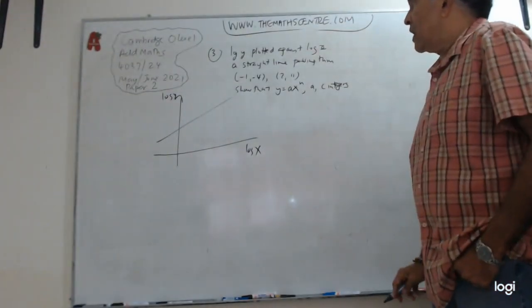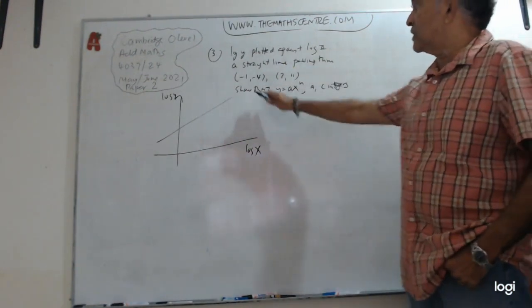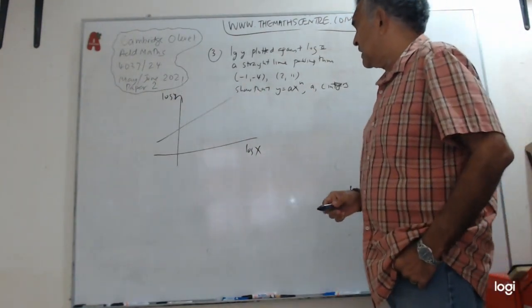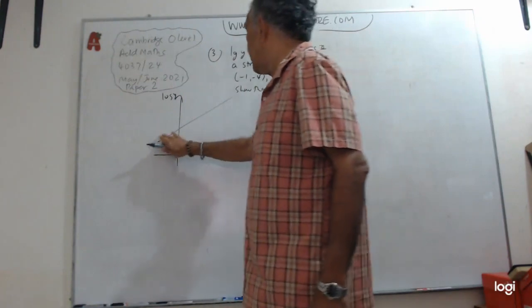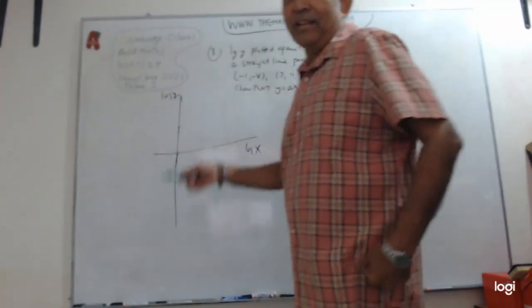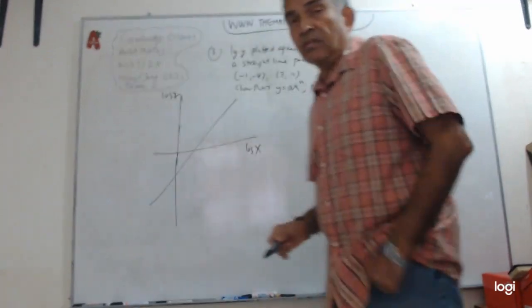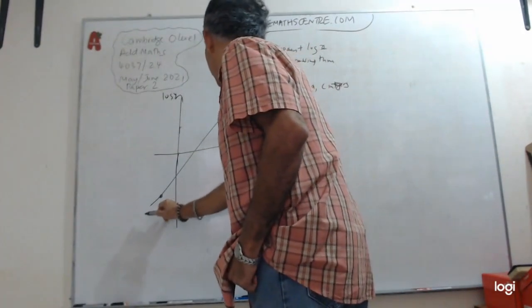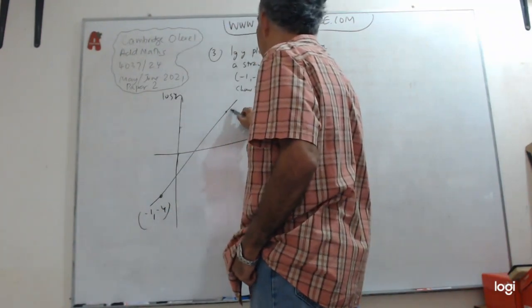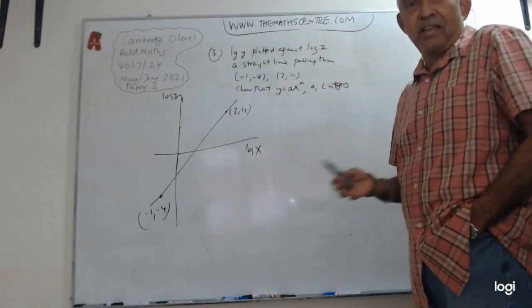They're telling you that this straight line is passing through these two points. Maybe I can redraw this. This is not to scale, just to give you an idea. So let's just go ahead and do this. So this will be minus 1, minus 4, and this will be 2, 11. This is just to give you an idea. You can't draw this to scale.